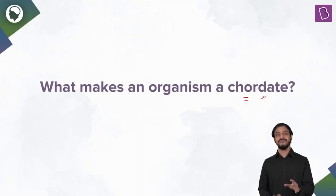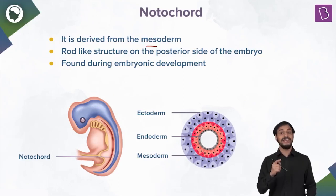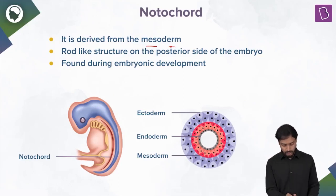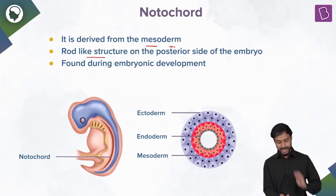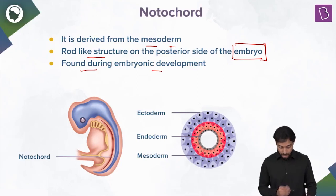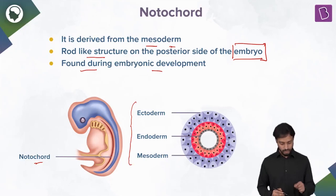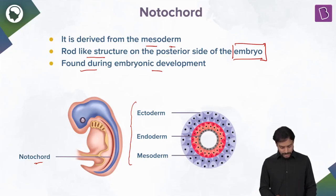Chordates are basically the organisms which have the notochord. The notochord is derived from the mesoderm — you remember the three germ layers: ectoderm, endoderm, mesoderm. It is a rod-like structure on the posterior side of the embryo, found during embryonic development. You can see the notochord here with the three layers: ecto, endo, and mesoderm.